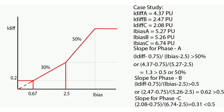For phase B, using the same formula — (I_differential minus 0.75) divided by (I_bias minus 2.5) — which must be greater than 0.5: the differential current is 2.47 per unit and bias current is 5.26 per unit. So the slope equals (2.47 minus 0.75) divided by (5.26 minus 2.5), which equals 0.62 — greater than 0.5 or 50%. Again, for phase B, the differential current remains in the tripping region.